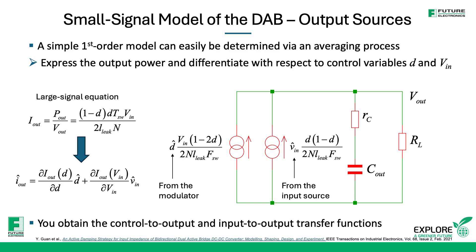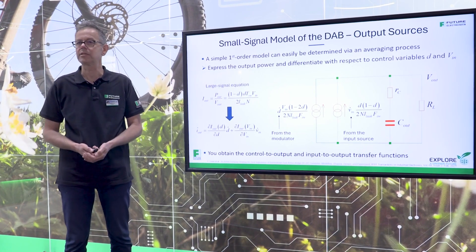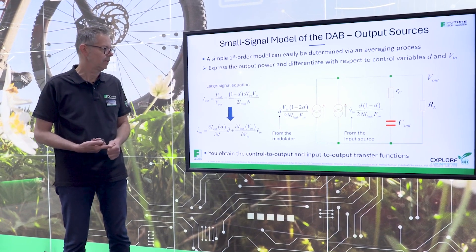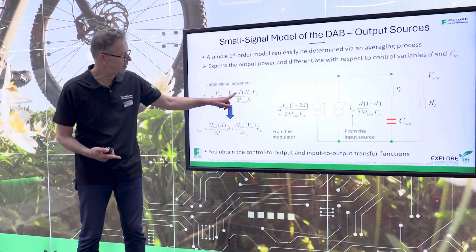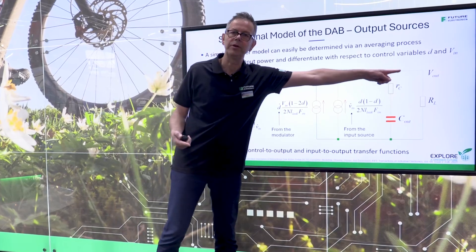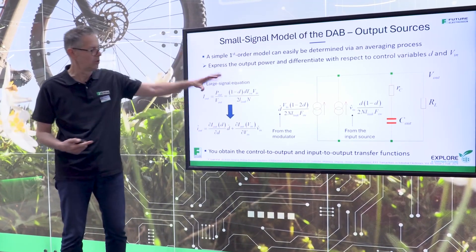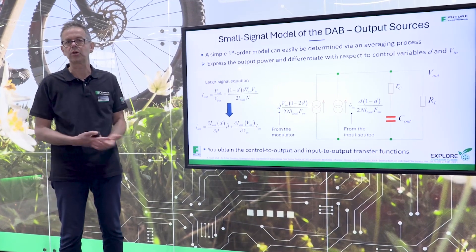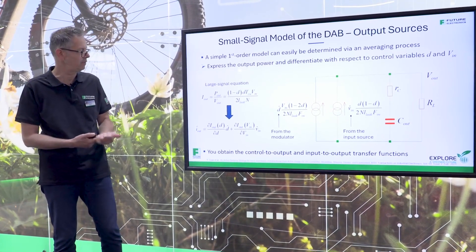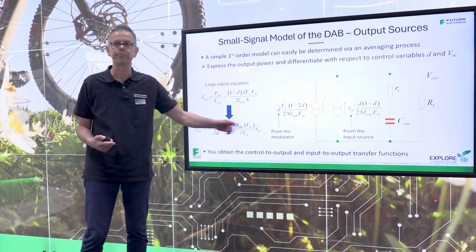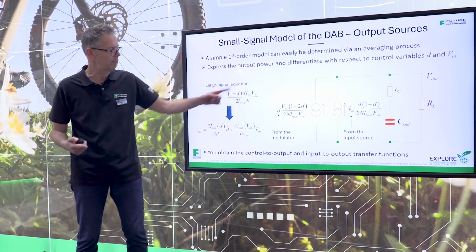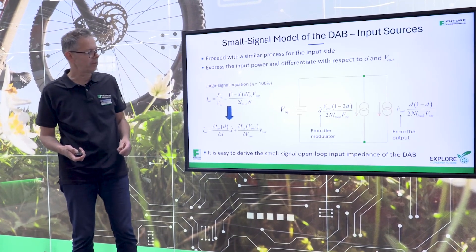When I start talking about power supply, I always like to think about loop control. When you want to think about loop control, you need to go through a small signal analysis, because the ultimate exercise is to obtain the control-to-output transfer function. If I start exciting the control variable, what type of response will be obtained on the output voltage? You start with a nonlinear equation and apply partial differentiation, determining the sensitivity of that equation to some variables — the duty ratio and the input voltage. You end up with an average model, which is a first-order model, as you can see on the right side here.